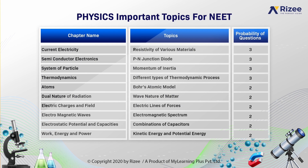In the chapter atoms, important topic is Bohr's atomic model. Probability of questions asked are 2. In the chapter dual nature of radiation, important topics are wave nature of matter. And probability of questions asked are 2. In the chapter electric charges and field, important topic is electric lines of forces. Probability of questions asked are 2. In the chapter electromagnetic waves, important topic is electromagnetic spectrum. Probability of questions asked are 2. And in the chapter electrostatic potential and capacitors, important topic is combinations of capacitors. And the probability of questions asked are 2.